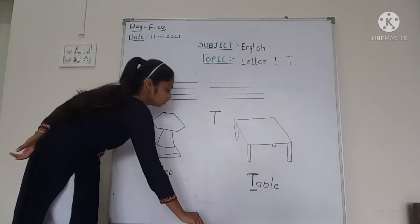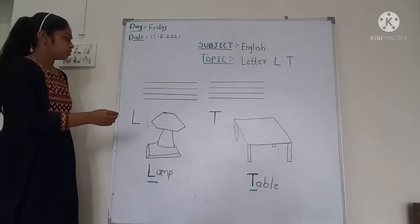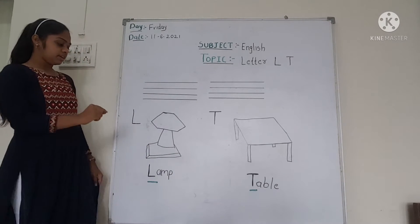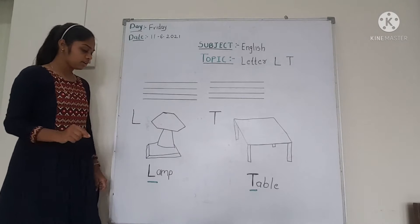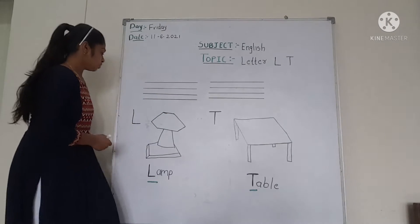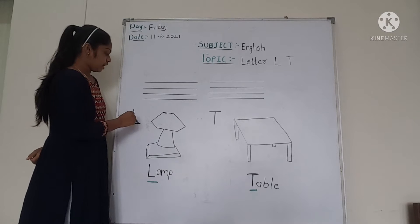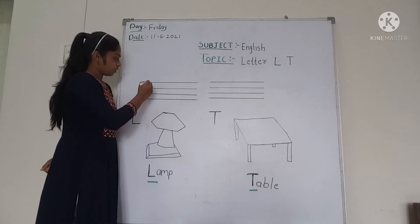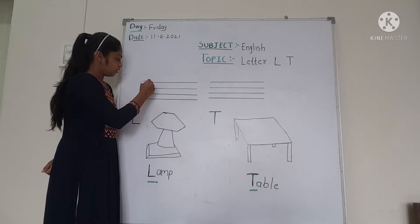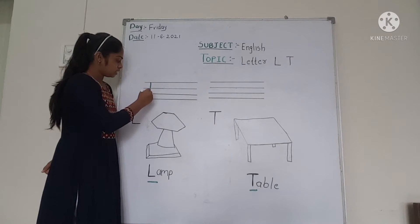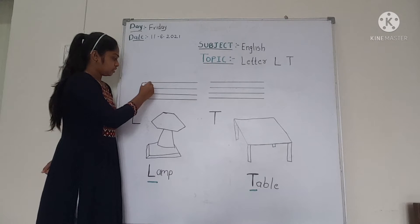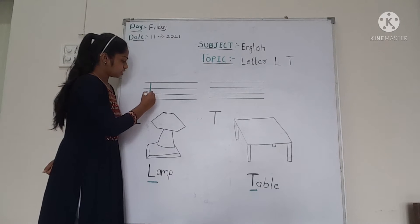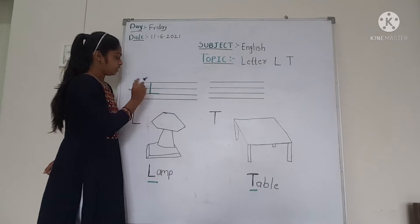We are going to write letter L and T. So how to write letter L? You can see, first of all, draw a standing line. Standing line and second is sleeping line.